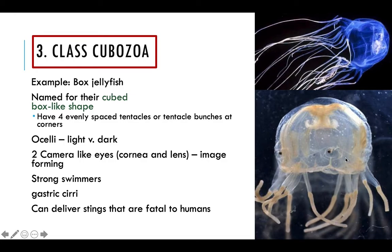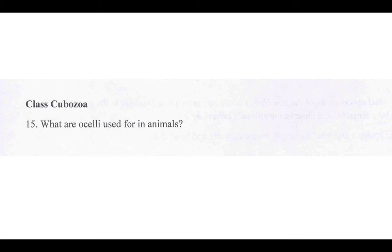Next class is Cubozoa. They're called this because they are kind of cube-shaped, box-shaped. They have what are called ocelli — camera-like eyes that help the organism differentiate between light and dark environments. They have those gastric cirri for digestion and are super strong swimmers. These are generally fatal organisms — if they sting a human, you don't typically come back from that. In your lab exercises: what are the ocelli used for? Differentiating between light and dark.